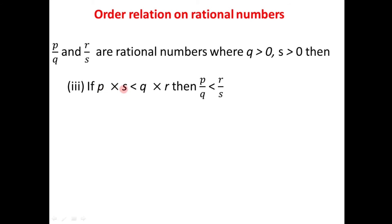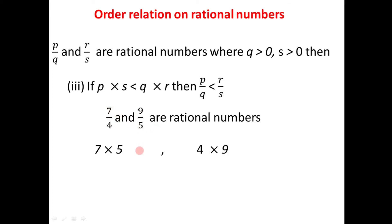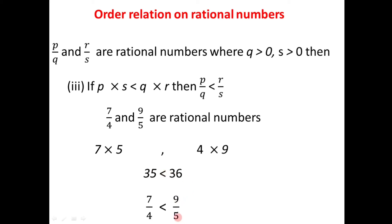The third rule: if the first product is less than the second, the first number is also less than the second. Consider two numbers 7 by 4 and 9 by 5. The product of 7 and 5 is 35, and the product of 4 and 9 is 36. Since 35 is less than 36, the first product is less than the second, so the first number must be less than the second: 7 by 4 is smaller than 9 by 5. This is how we determine the order relation using these three rules.